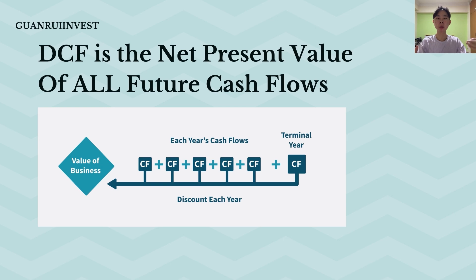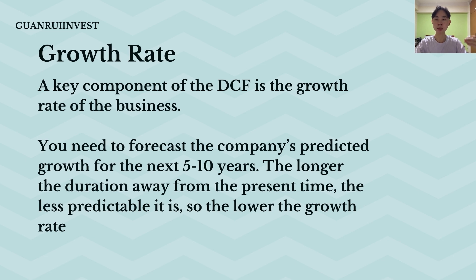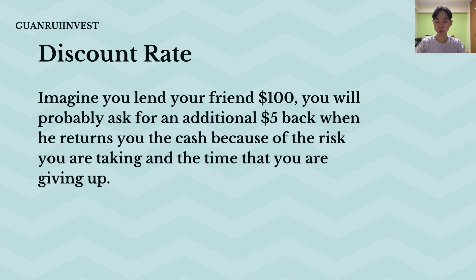Your discounted cash flow analysis is basically the net present value of all your future free cash flows. You take the free cash flow of the company from now to judgment day and discount all those cash flows to today's present value. A key component is your growth rate — you need to forecast a company's growth rate for the next five to ten years. The longer the duration, the harder it is to forecast, so you want a lower growth rate towards the tail end of your predictions.